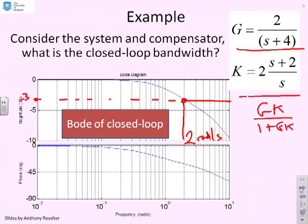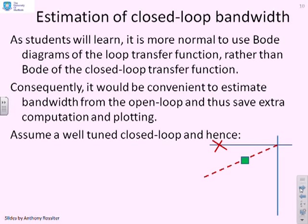Now we want to do some estimation. Can we get to this answer a bit more quickly? What you'll have noticed in the earlier videos is that we were actually doing Bode diagrams of the loop transfer function, not the closed-loop. Consequently, it would be convenient to estimate bandwidth from the open-loop Bode diagram. Then we don't need to do the computations and plotting of the closed-loop. That's what we're going to try to do here.